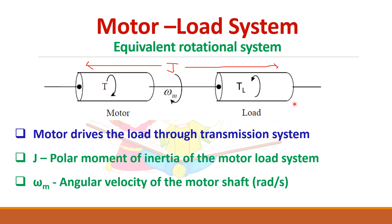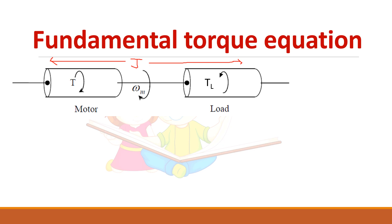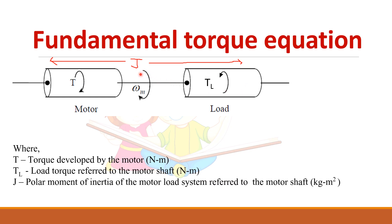Now let us derive the fundamental torque equation for this motor load system. So here T is the motor torque and TL is the load torque and J is the moment of inertia of the system. So the motor torque will supply the load torque plus it has to supply the inertia torque, which is given by d(Jωm)/dt. So the motor torque should supply the load torque plus this component due to inertia.